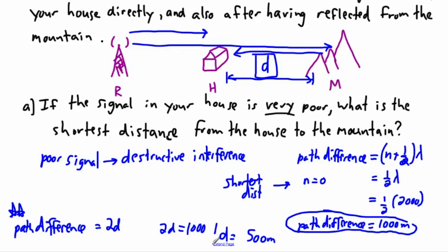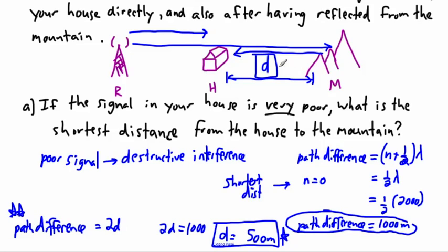So that is how we solve Part A. It's a matter of first figuring out the path difference and then determining what that path difference means in terms of the drawing and that distance D.